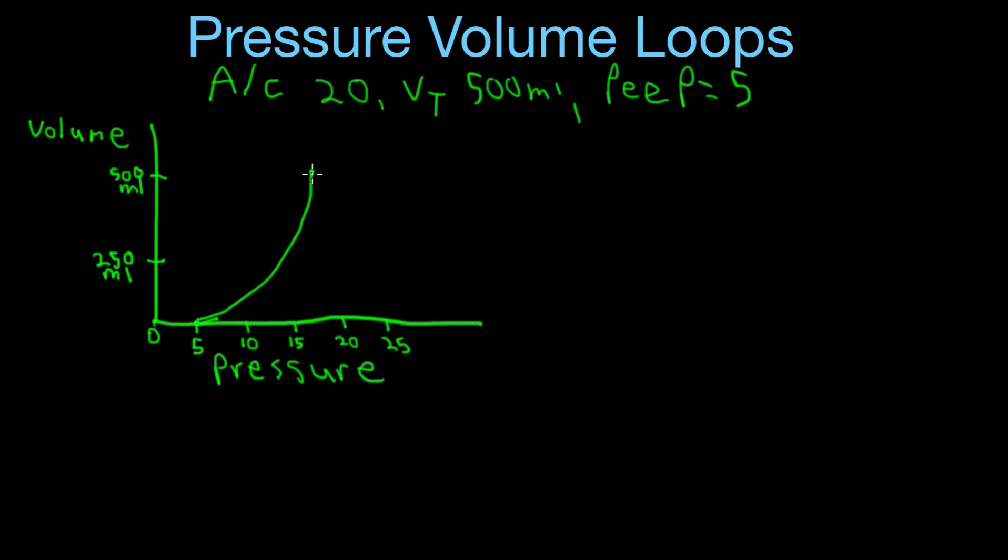Now once it reaches this point, it's going to cycle off and the patient is going to exhale, and then everything will start to decrease again back down to wherever the set PEEP level is, which is 5. Okay, so this is an example of a machine delivered tidal volume of 500 with a PEEP setting of 5.